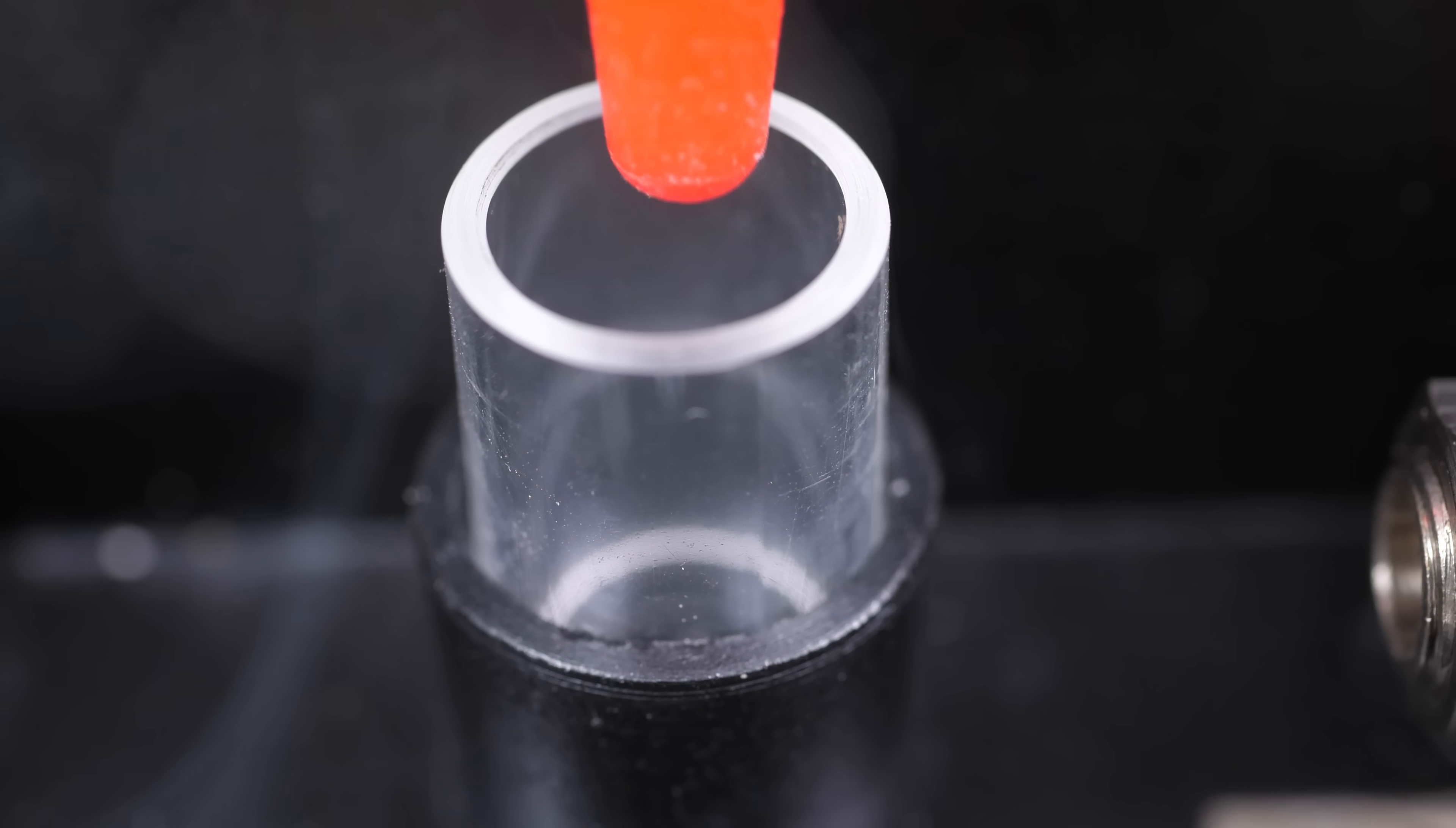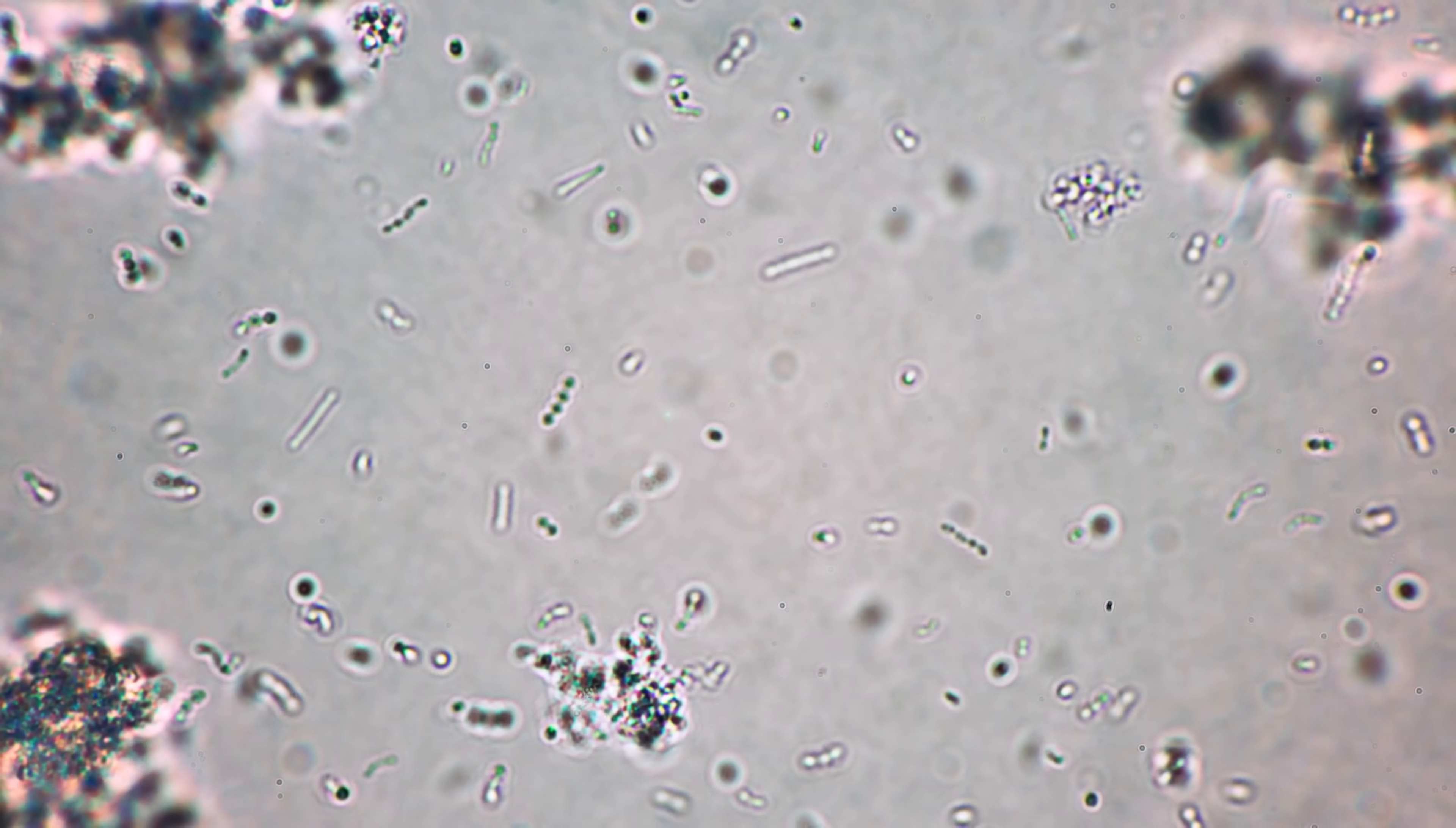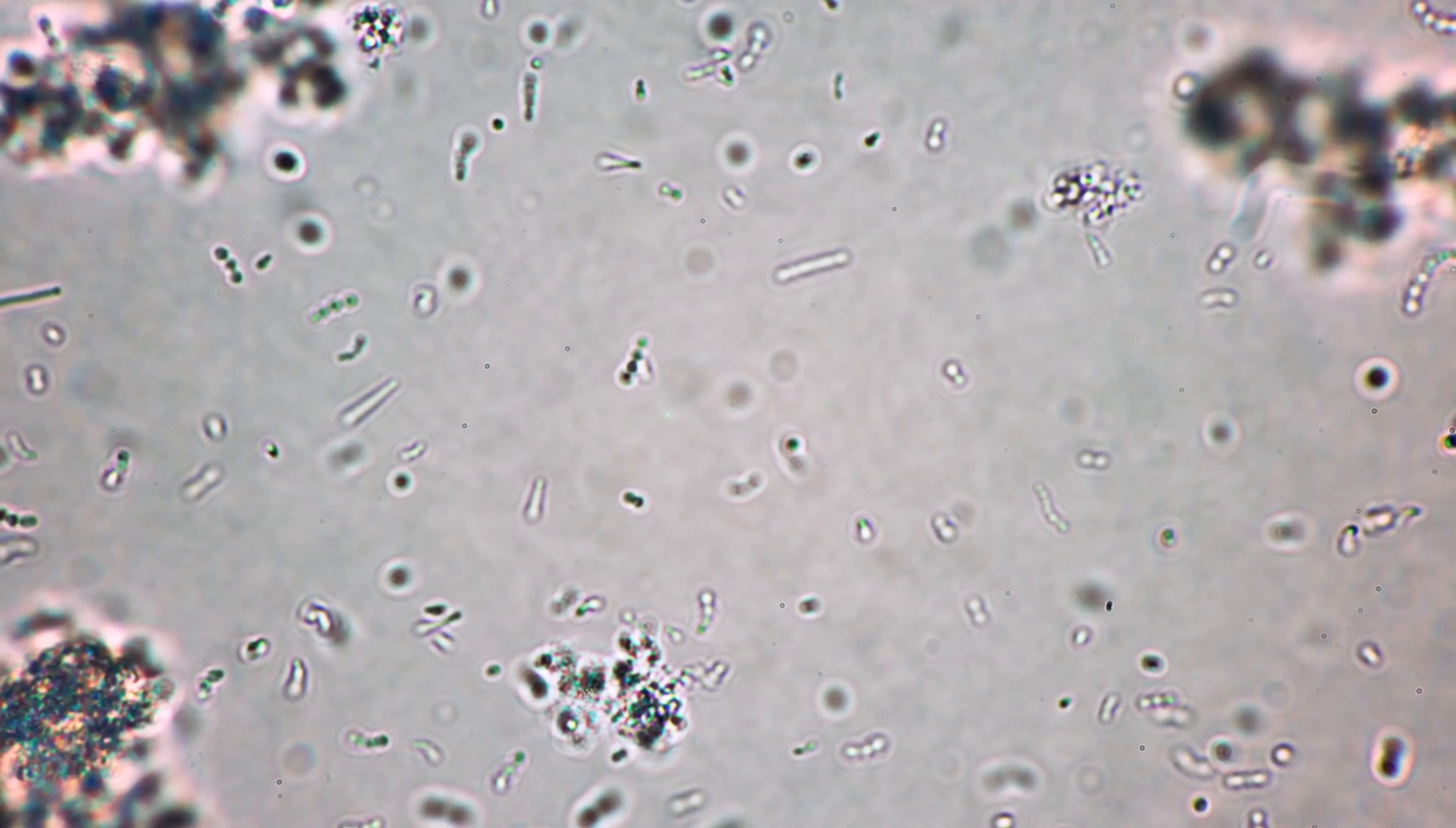In this video, I'm going to show you a few different ways you can see Brownian motion. I'm going to explain Brownian motion with this model that I made. And finally, I'm going to show how Einstein was able to work out how much atoms weigh by observing and measuring Brownian motion.